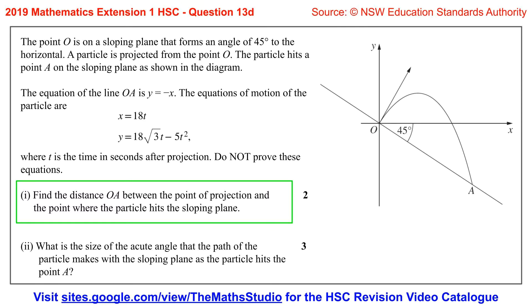Part 1. Find the distance OA between the point of projection and the point where the particle hits the sloping plane.